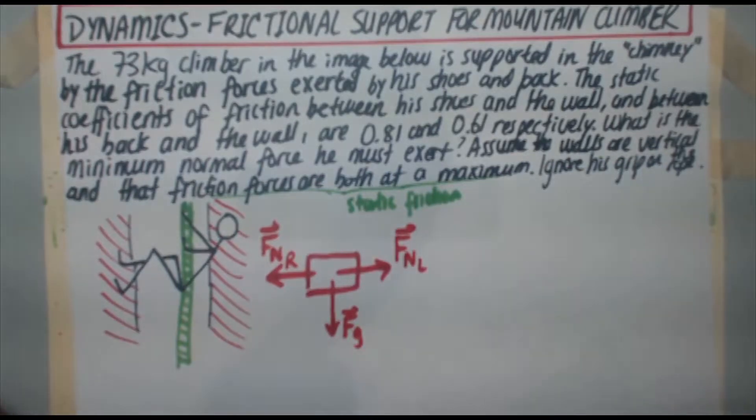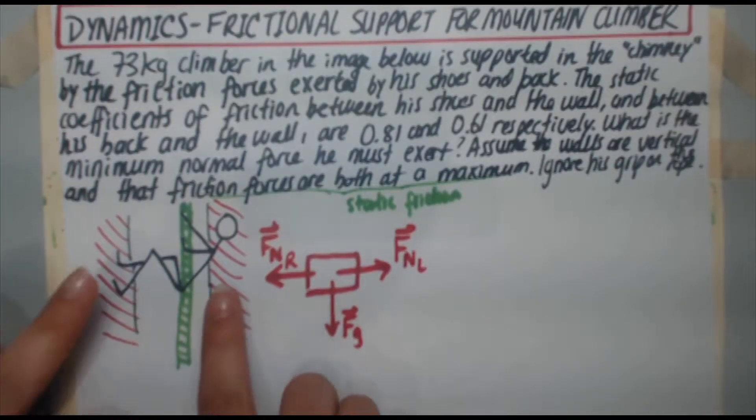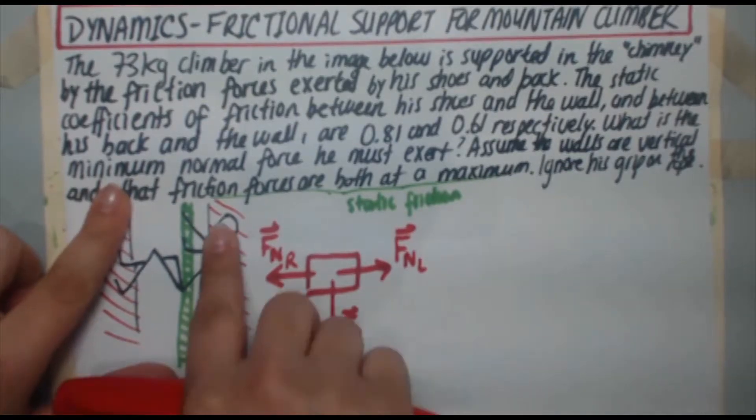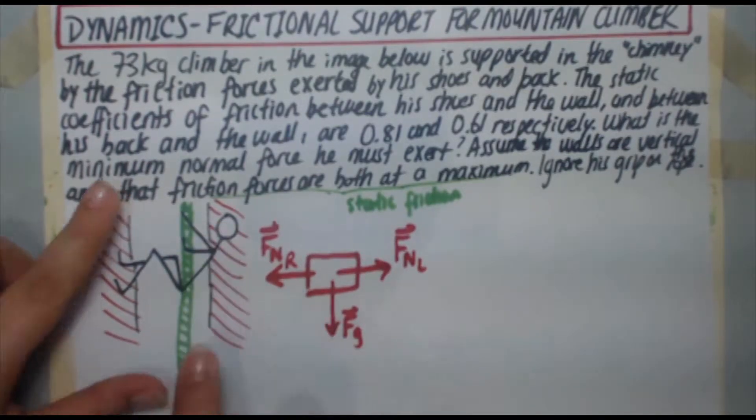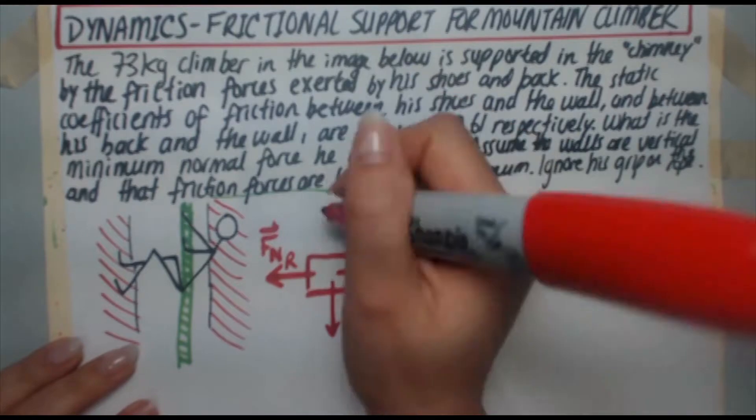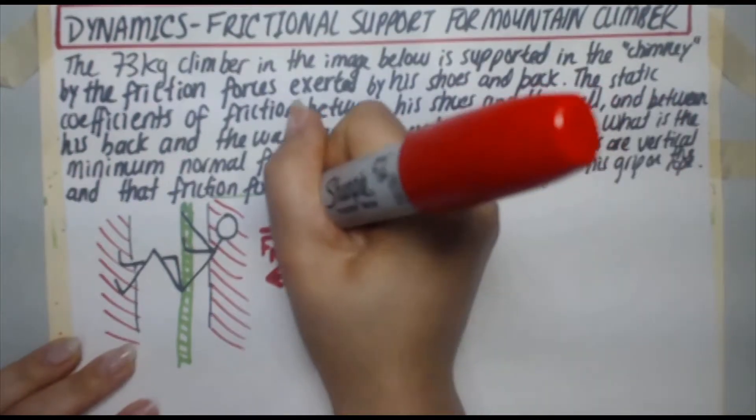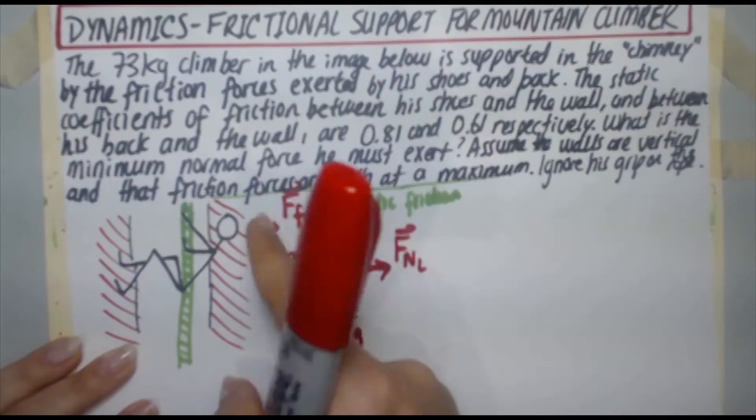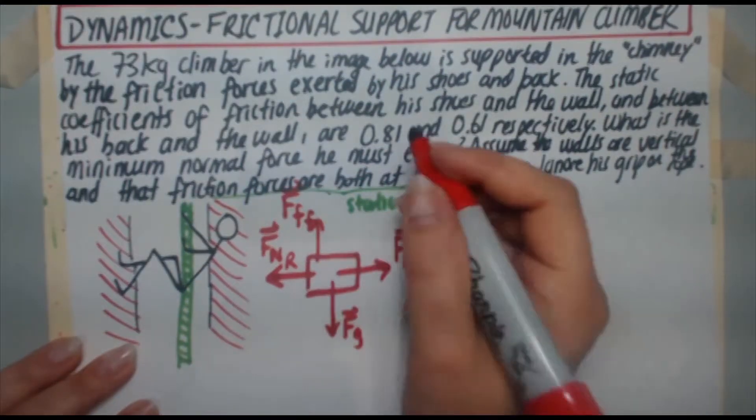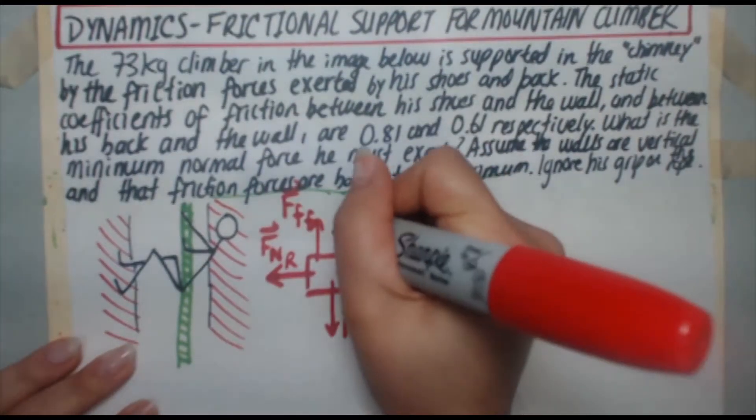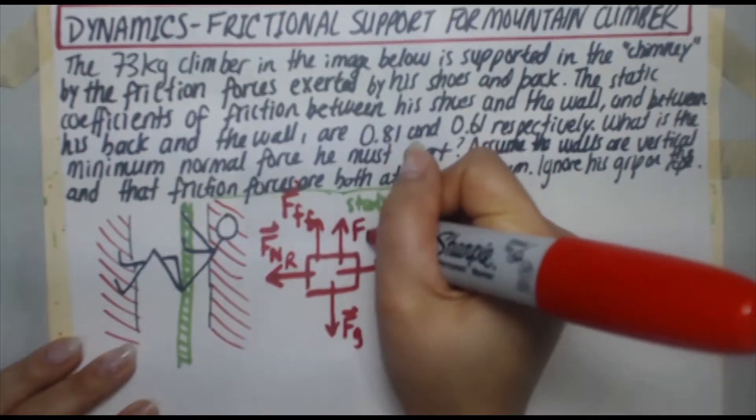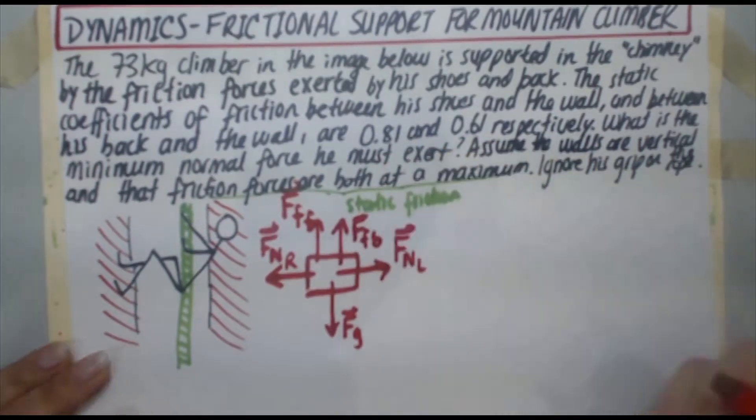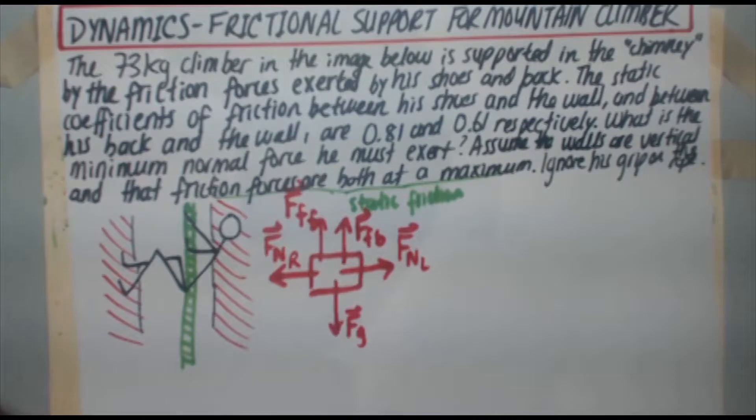We're almost done here. Now we just have to deal with our frictional forces. Obviously there's two here. We've got friction with his feet and we've got friction with his back. So I'm going to say frictional force from his feet, that's going up. So that's going to be called FF subscript F again for frictional force on his feet and frictional force on his back, FFB.